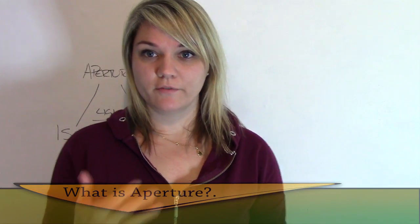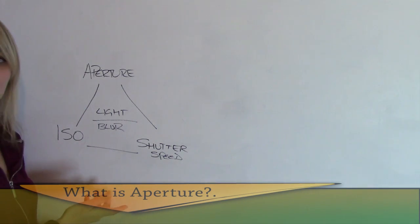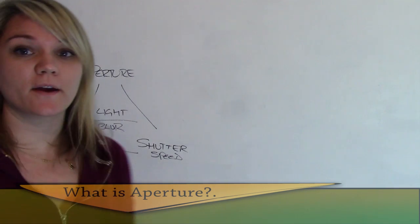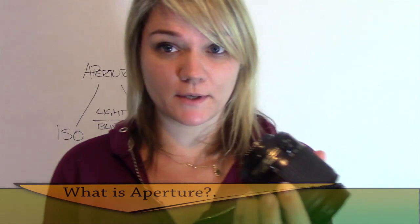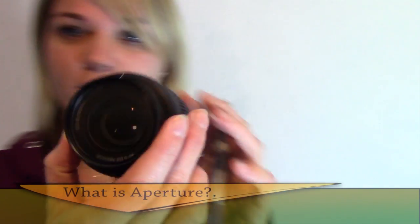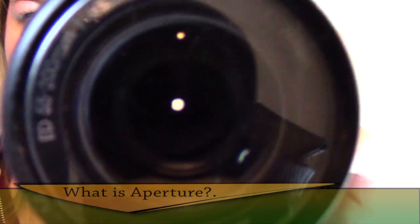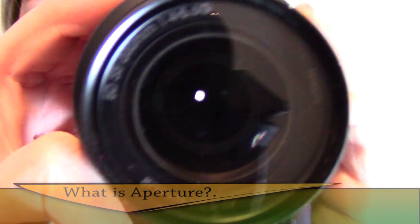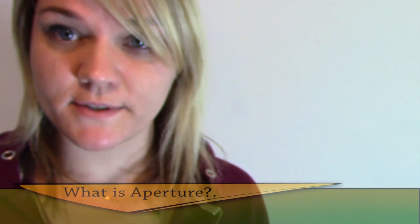The first element of the triangle is aperture. Aperture is all to do with your camera lens. If you look through the lens, you can see the hole, and that hole gets bigger or smaller depending on what settings you use.